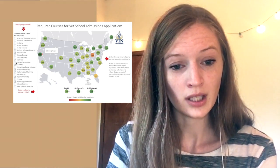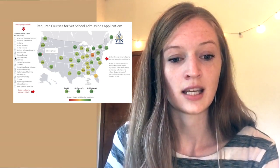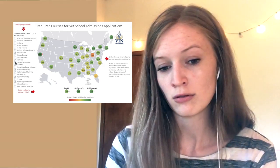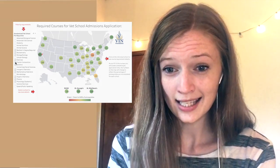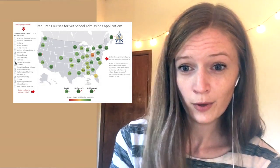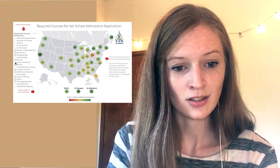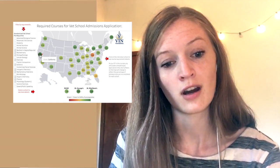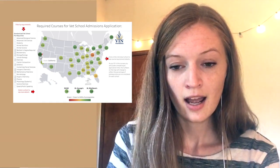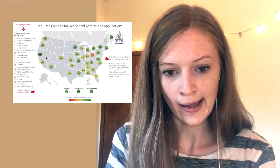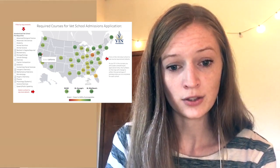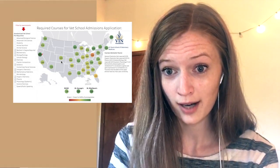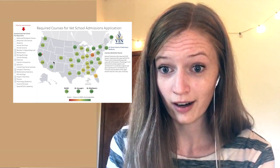You can click the boxes on the left-hand side of the screen. If you look at the map as it is, several of them are already clicked. Hypothetically, if these are the classes you've already taken, you can look at the map and say: okay, at UC Davis I've already got 100% of their prereqs, and I could theoretically apply there.